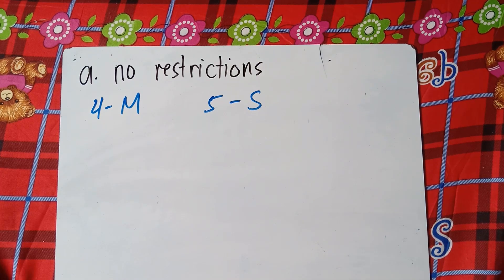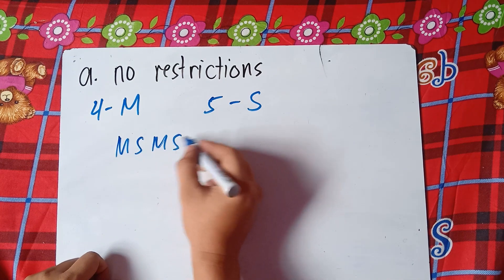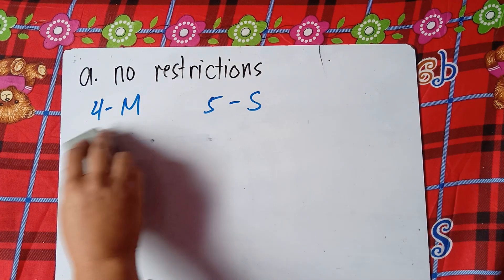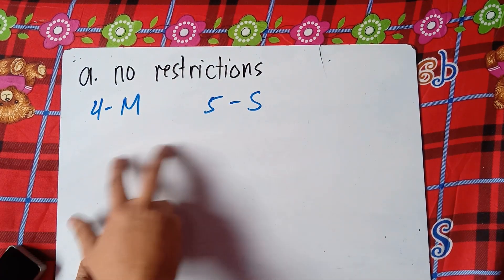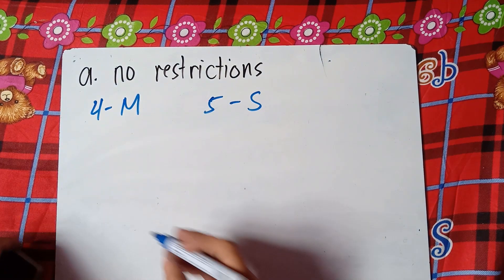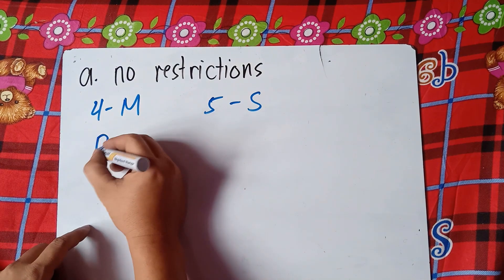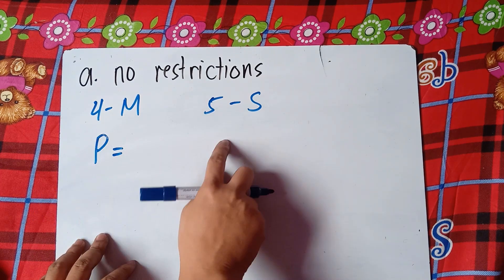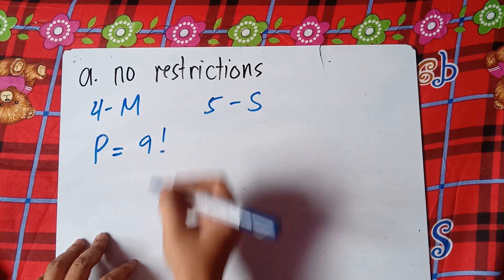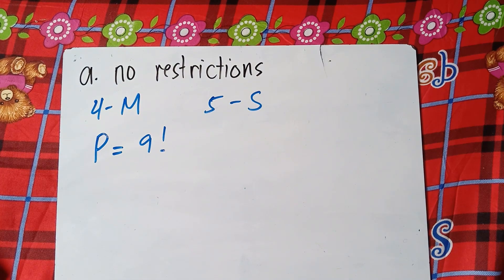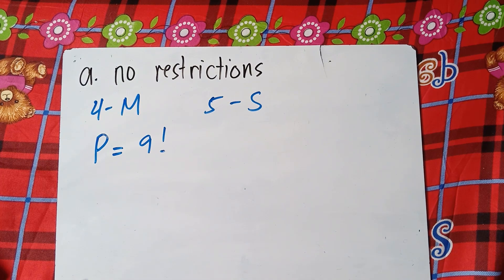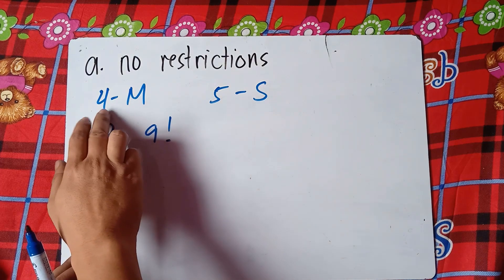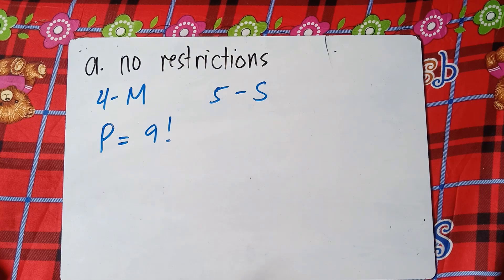So you can arrange it in any order — math, science, mathematics, science, science, math, science — in any order. So no restriction. Therefore, you just count the total number of books. We have four math and five science books, so just add them: four plus five, that's nine. That would be nine factorial.